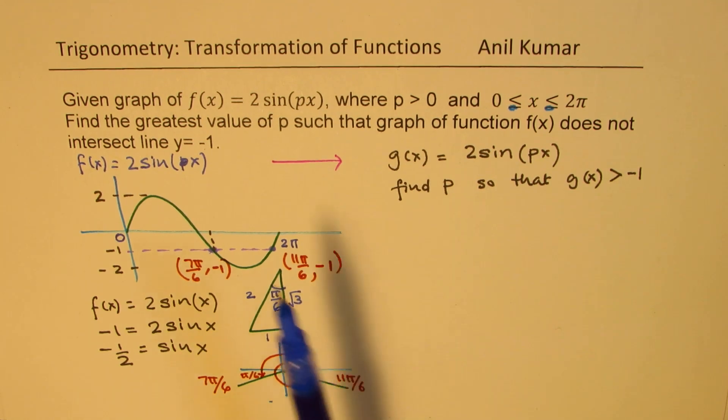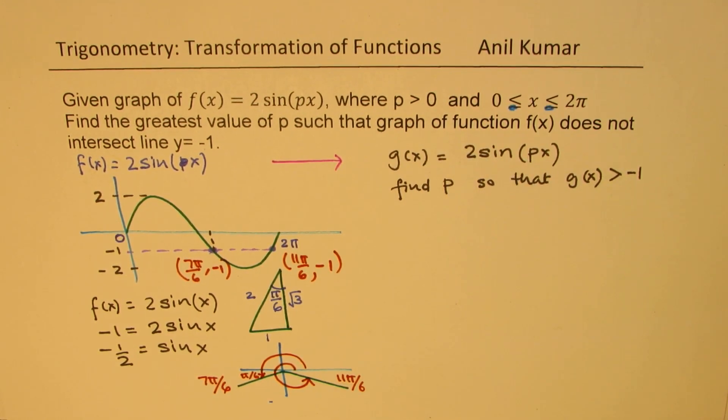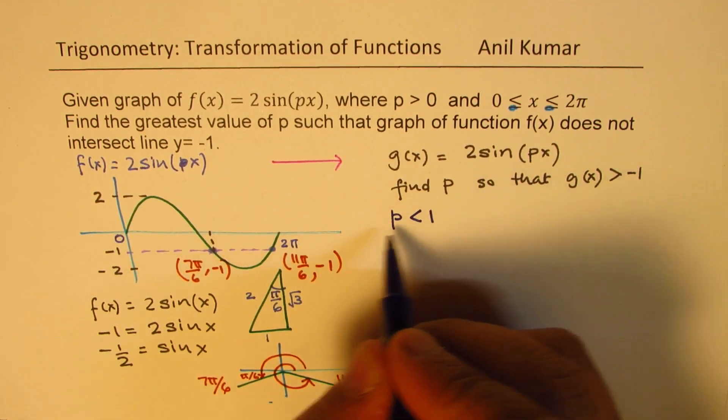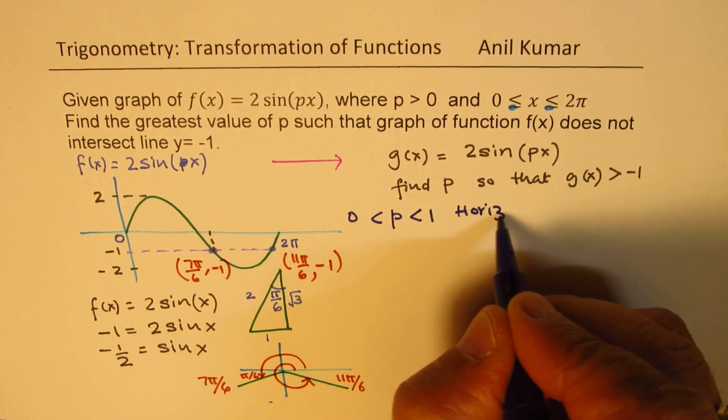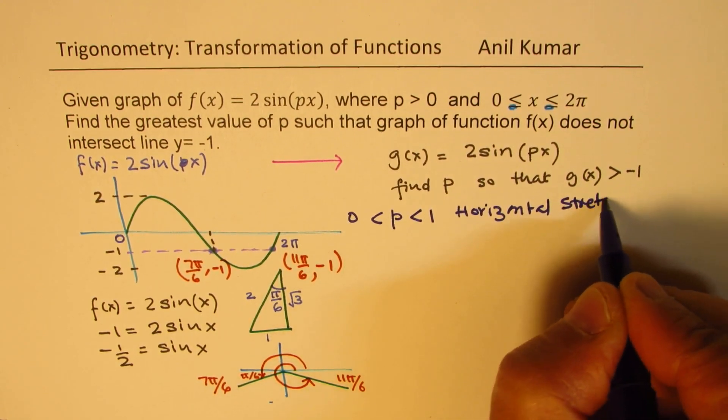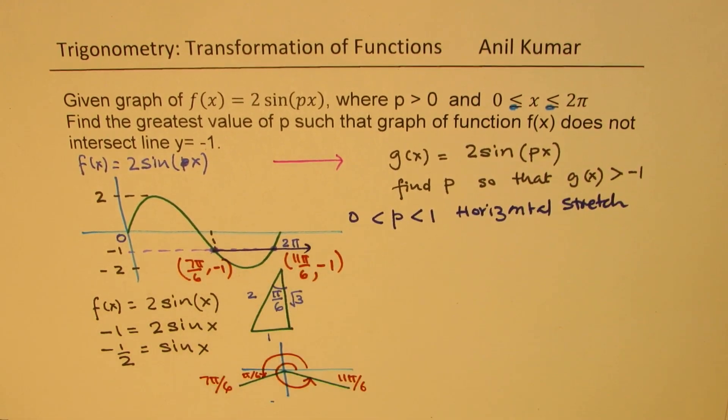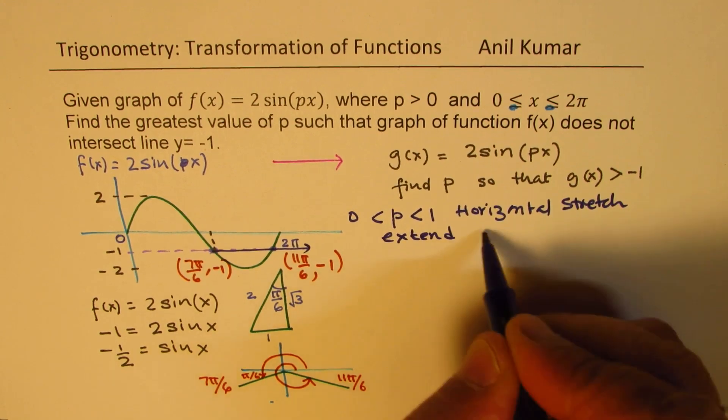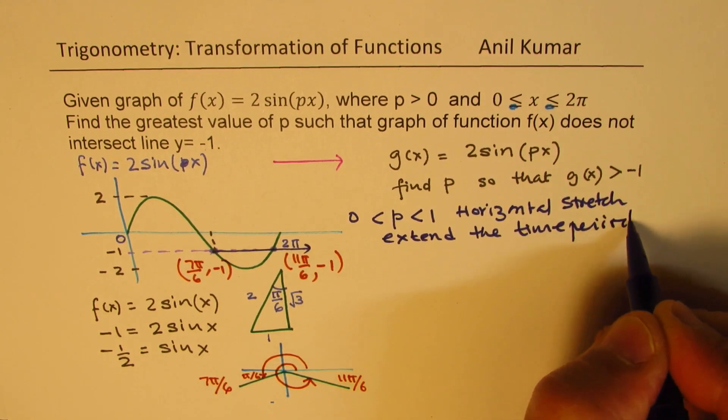Now, the question is, we have to transform this function so that g(x), which is 2 sin(px). Now this p signifies what? So p, when it is less than 1, greater than 0 but less than 1, it means horizontal stretch. Horizontal stretch means I could pull this point out. So I can extend the time period. So we can extend the time period.